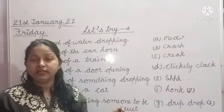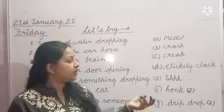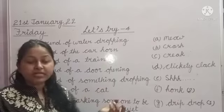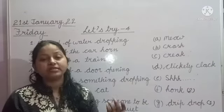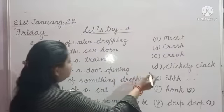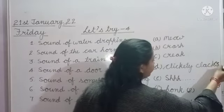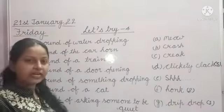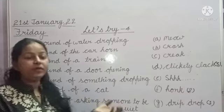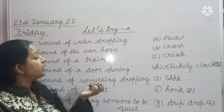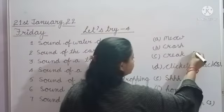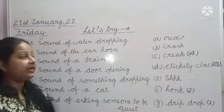When the train signals to move from somewhere, it makes the sound 'toot toot.' And the proper moving sound of a train is 'clickety-clack.' We will match the third one with 'clickety-clack.' Now the next one — 'sound of a door opening.' When we open the door, it makes a sound. The door opening sound is 'creak.'